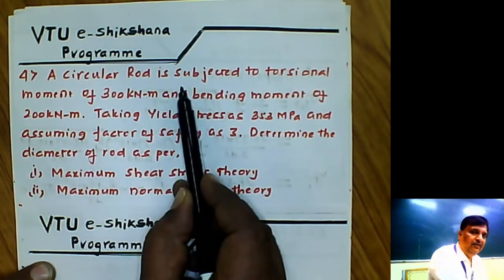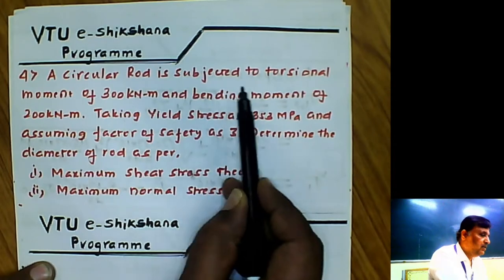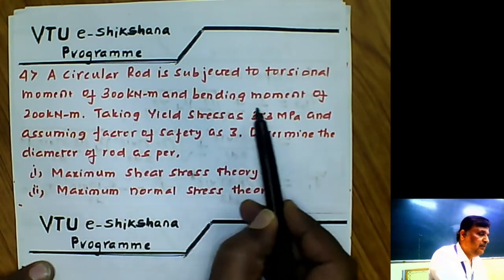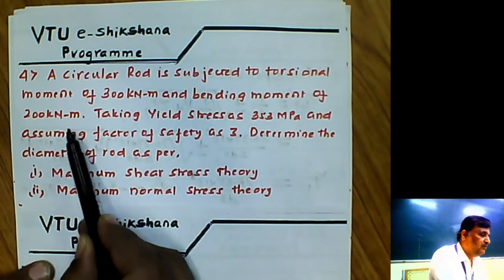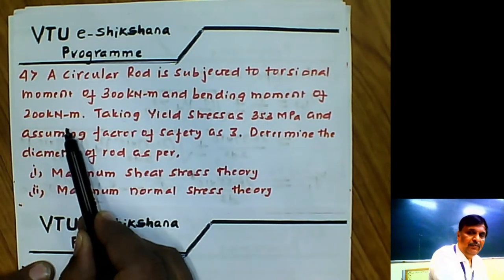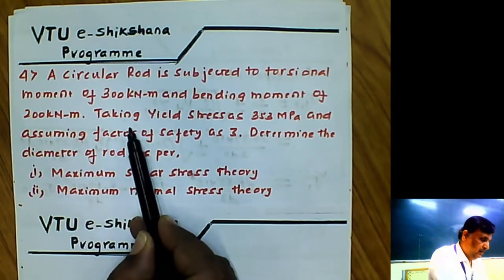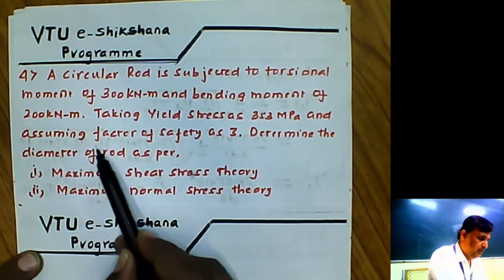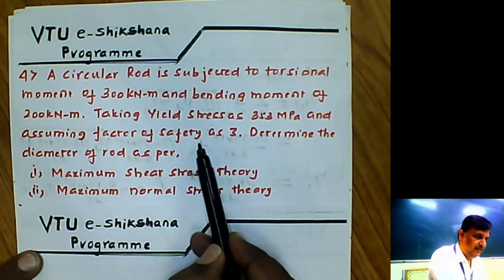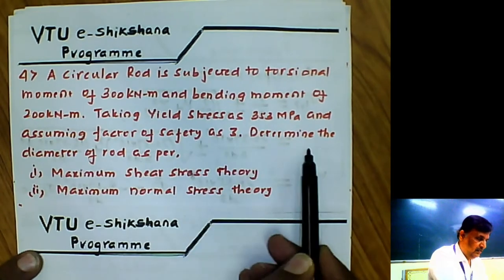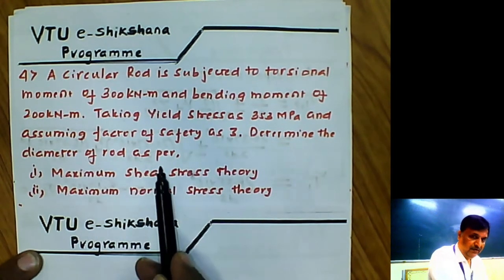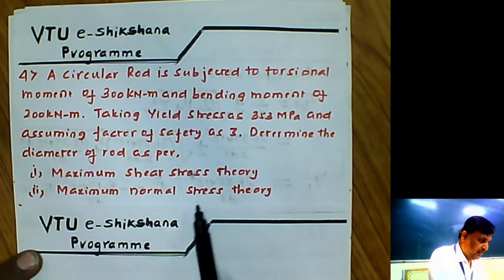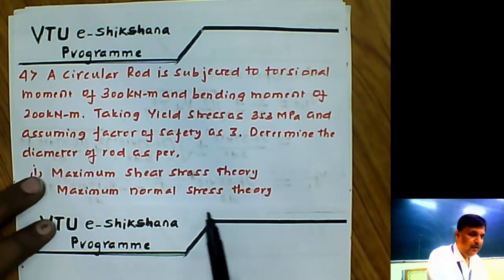The circular rod is subjected to a torsional moment of 300 kNm and a bending moment of 200 kNm. Taking yield stress as 353 MPa and assuming a factor of safety of 3, determine the diameter of the rod as per maximum shear stress theory and maximum normal stress theory.